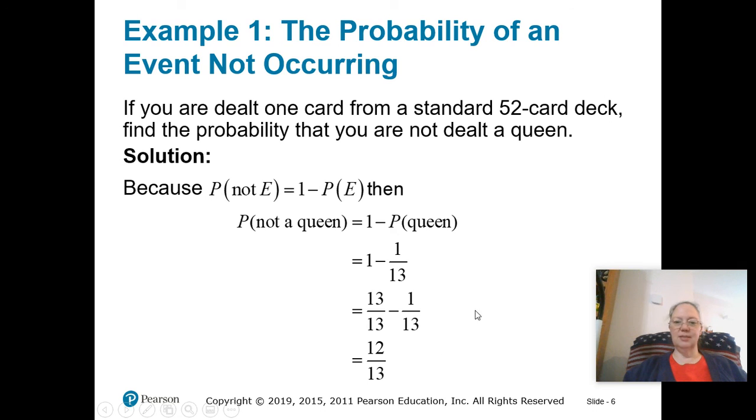This is basically saying the same thing. So the probability of not being a queen, you take 1, subtract the probability that it is a queen. 1 subtract, if you take 4 out of 52, that will simplify to 1 over 13. Get a common denominator and subtract.